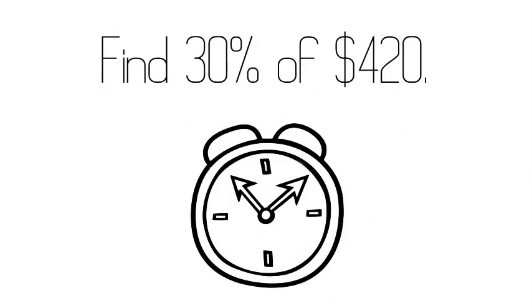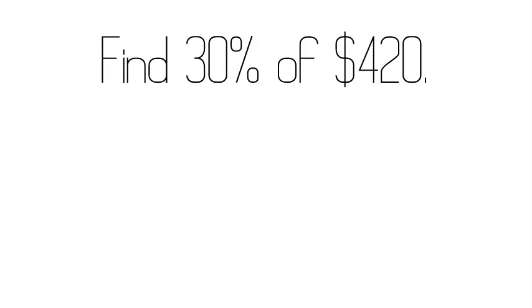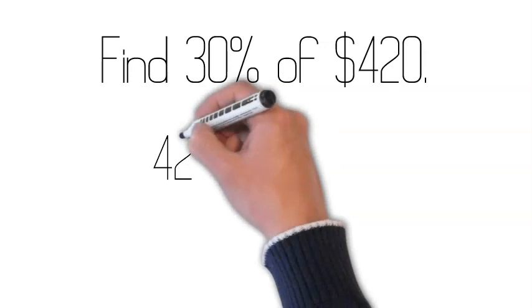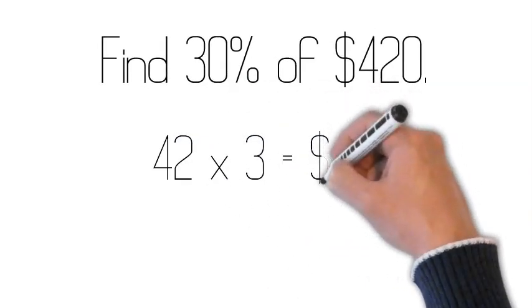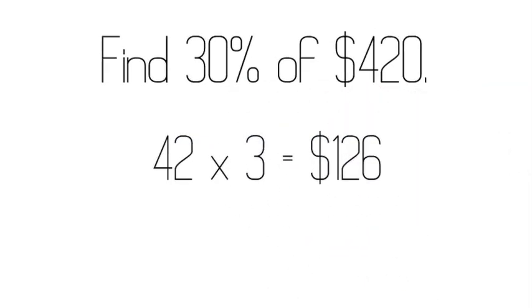Do you know how to do it? That's right, 10% is 42 and 3 lots of 42 is $126. Well done!